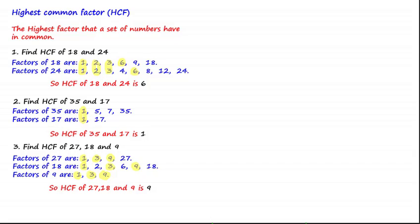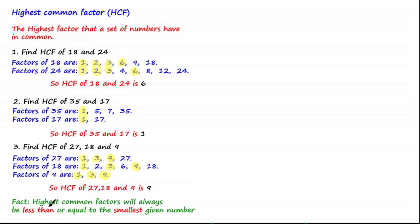Looking at these examples shows us something we can generalize about the highest common factor: the highest common factor will always be less than or equal to the smallest given number. In the last example, the smallest number was 9 and the HCF was 9. For 35 and 17, the HCF was 1 — certainly less than both. And for 18 and 24, the HCF was 6, which is less than both 18 and 24. It's an obvious but useful fact to remember about highest common factors.